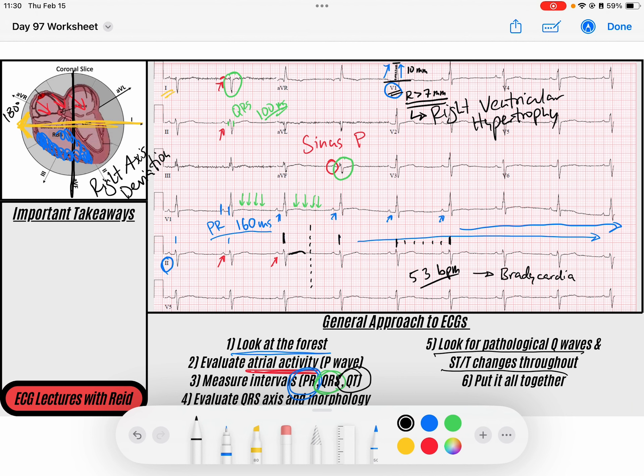And so when we put this together, what do we have? We've got a sinus rhythm, specifically a sinus bradycardia at a rate of 53 beats per minute with right ventricular hypertrophy causing right axis deviation.